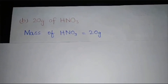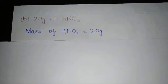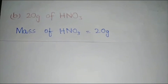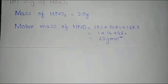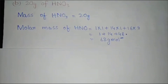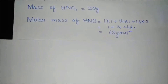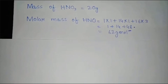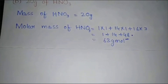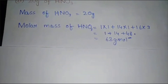Now the second part: 20 grams of nitric acid (HNO₃) is given. So mass of nitric acid is equal to 20 grams. The molar mass of nitric acid: hydrogen mass 1 × 1, plus nitrogen mass 14 × 1, plus oxygen mass 16 × 3. The molar mass is 63 grams per mole.